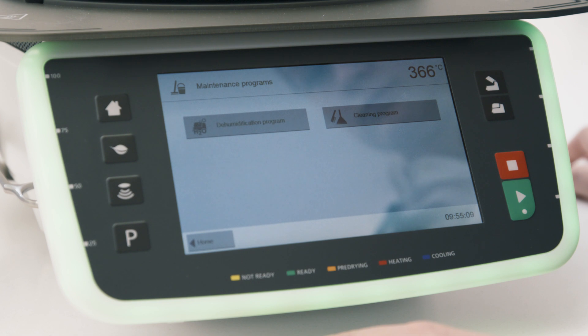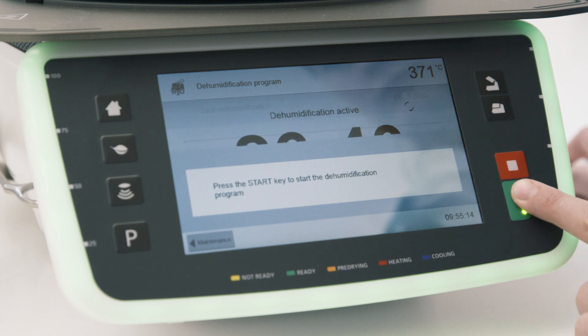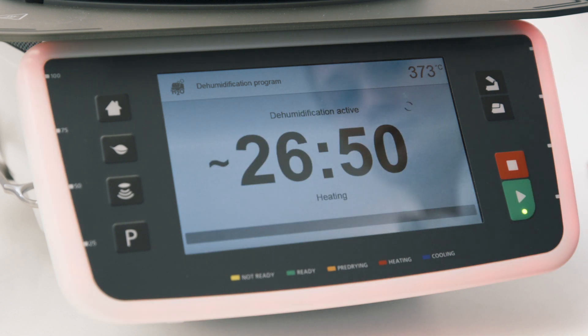You will find the dehumidification program in the maintenance programs menu on the home screen. Open the dehumidification program and press the start key. The program takes about 30 minutes to complete.